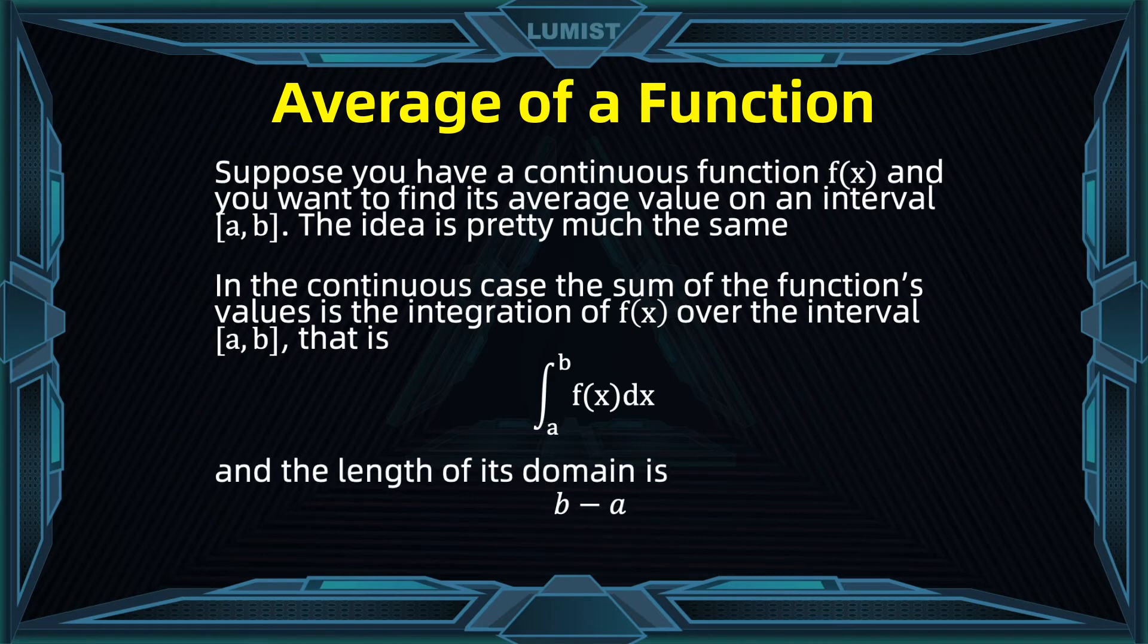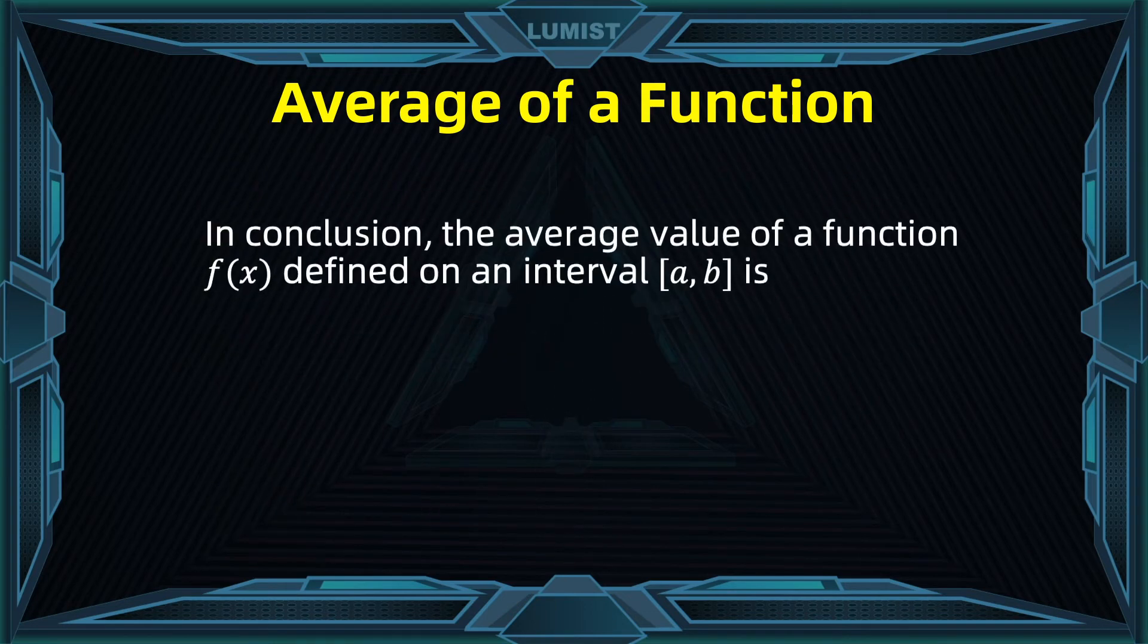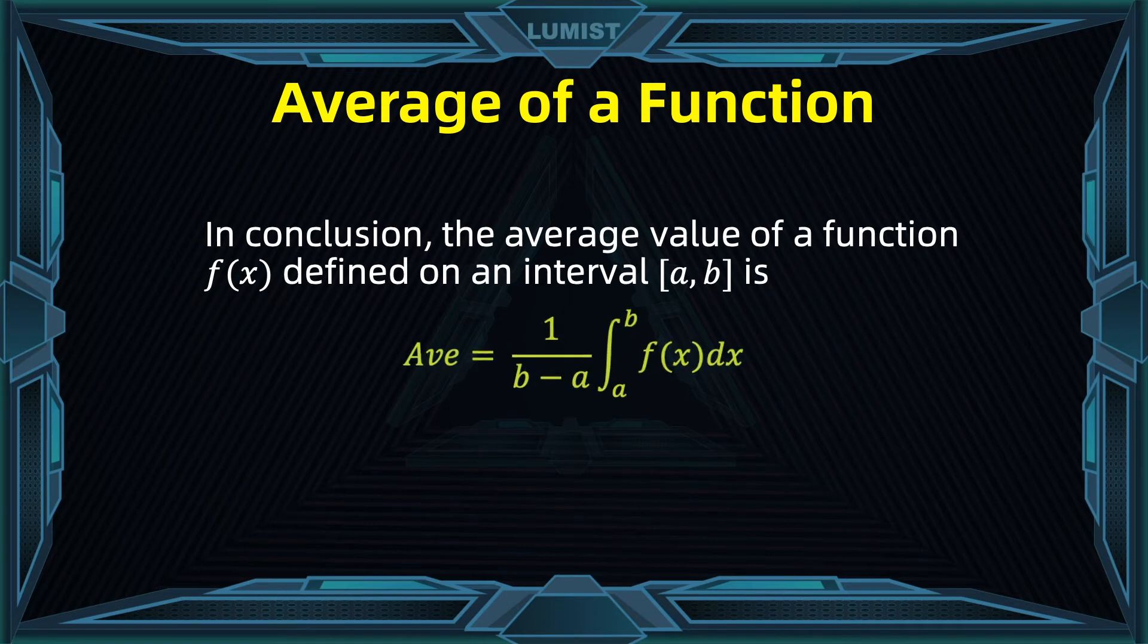Now, the length of the interval is just b minus a. In conclusion, the average value of a function f of x defined on a closed interval a, b is 1 divided by the length of the interval, that is b minus a, times the integral from a to b of f of x dx. This is the formula for the average of any continuous function.